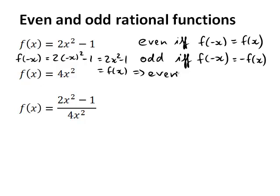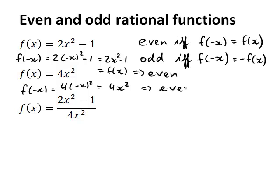Let's look at the second one. f of x is 4x squared. If I find f of negative x, I get 4 times negative x in brackets squared. And of course, that is also 4x squared for the same reason as above. And that means this function is also even.